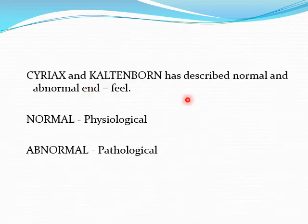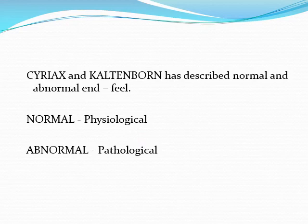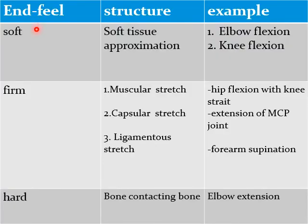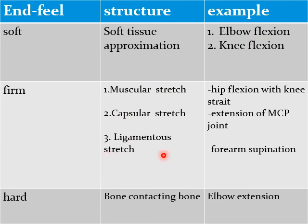Cyriax and Cyriax have described normal and abnormal end feel. Normal end feel has three types: soft, firm, and hard. Soft end feel, i.e. soft tissue approximation, is seen for example in elbow flexion and knee flexion. Firm end feel involves muscular stretch, capsular stretch, and ligament stretch — for example, hip flexion with knee extended produces muscle stretch, and extension of the metacarpophalangeal joint produces capsular stretch.